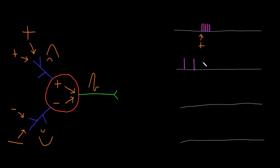Other neurons actually fire action potentials at a regular rate in the absence of any input. They do this because differences in their leak channels and/or voltage-gated channels spontaneously depolarize the membrane to threshold at a regular interval — very similar to how pacemaker cells in the heart function. With these types of neurons, excitatory input causes them to fire action potentials more frequently during the period of excitation, and then when that excitation goes away they return to their regular rate of firing.